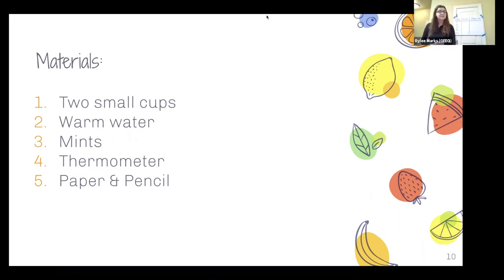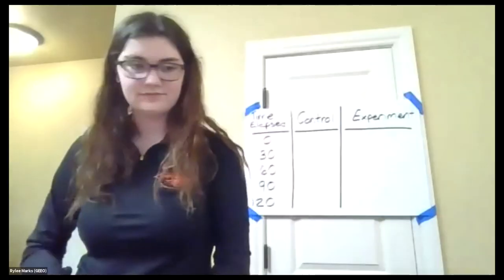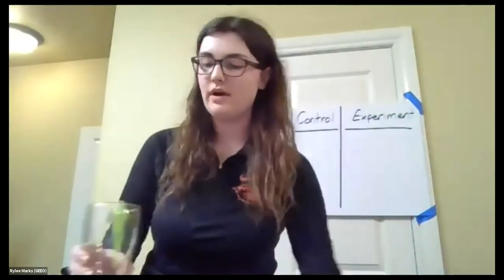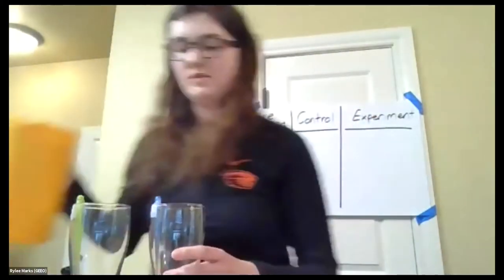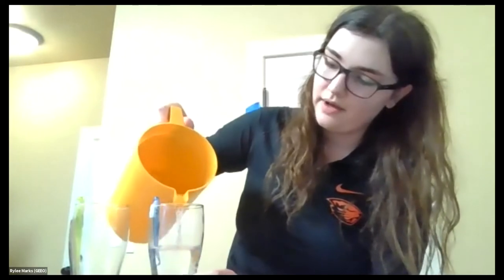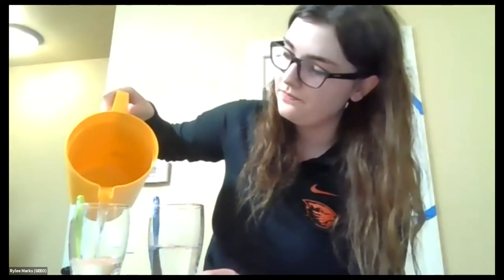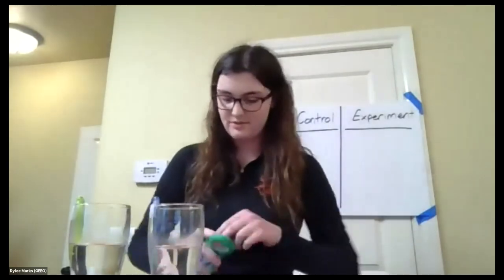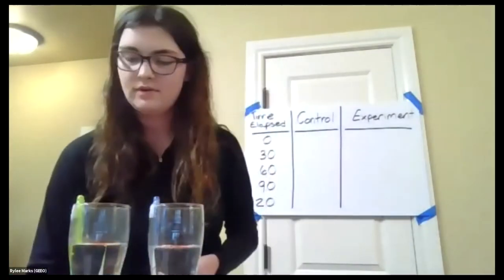All right, so after all of your materials are gathered, we can start our experiment. So the first thing you're going to want to do is fill both of your cups with your warm water. Now you're going to want to fill your cups with about the same amount of water, just so that we have as few differences between the cups as possible. Now as soon as you drop one, two, however many mints you want into your glass, our experiment is going to begin. I'm going to put my mints into the cup with the green thermometer, and we're going to take the initial temperature of both of our liquids.